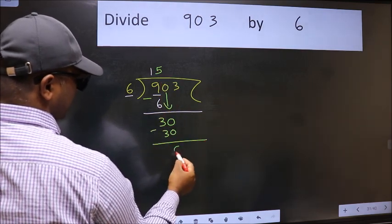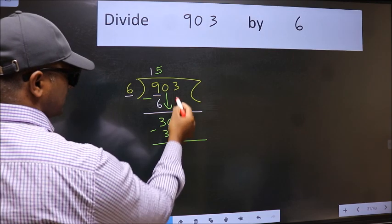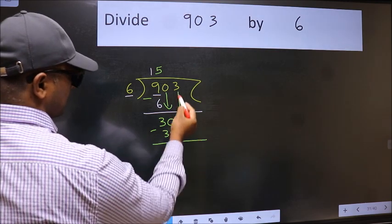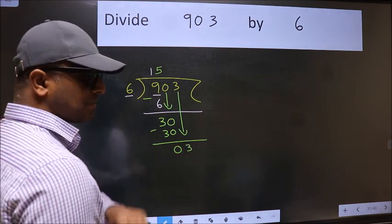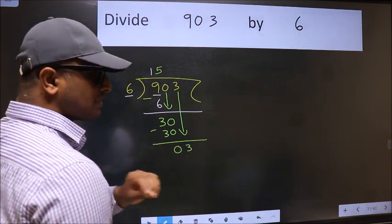Now we subtract. We get 0. After this, bring down the beside number. So 3 down. After this step, the mistake happens. And the mistake is this.